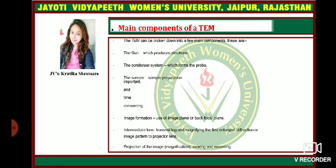The main components of a TEM can be broken down as follows: the gun, which produces the electrons; the condenser system, which forms the probe; and sample preparation, which is an important and time-consuming job. Then there is image formation at the image plane and back focal plane. An intermediate lens transmits and magnifies the first enlarged diffraction or image pattern to the projector lens, which then projects the image for magnification, viewing, and recording.